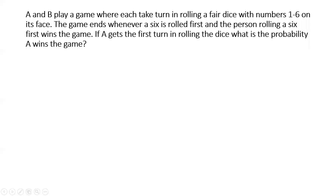A and B play a game where each takes turns rolling a fair dice with numbers 1 to 6 on its face. The game ends whenever a 6 is rolled first, and the person rolling a 6 first wins the game. If A gets the first turn in rolling the dice, what is the probability A wins the game?